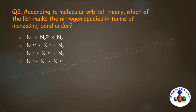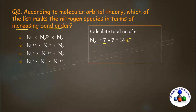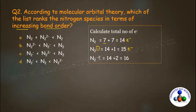The second question: according to molecular orbital theory, which of the following ranks the nitrogen species in terms of increasing bond orders? First, calculate the total number of electrons in each species. In N2 there are two nitrogen atoms with 7 electrons each, so 7 + 7 = 14 electrons. In N2 negative ion, add one electron to 14 to get 15 electrons. In N2 2-, add two electrons to 14 to get 16 electrons.